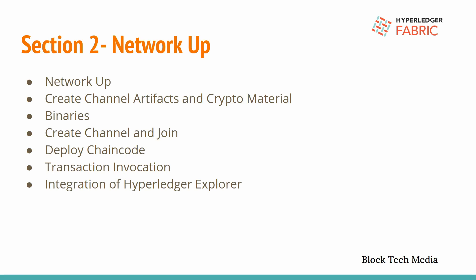Coming to the next part, that is the binaries. We have multiple binaries: peer, orderer, cryptogen, and configtxgen. When we clone the repository, I will show you how many binaries are there and what the basic operations are for each and every binary.